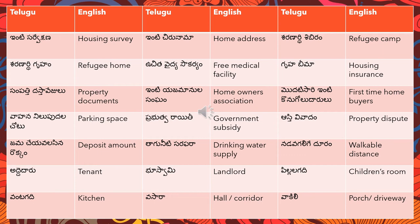'Gruha bheema' means housing insurance — 'bheema' means insurance. 'Na sampatti dasta vejilu' means property documents — 'dasta vejilu' means documents and 'sampatti' means property or assets.